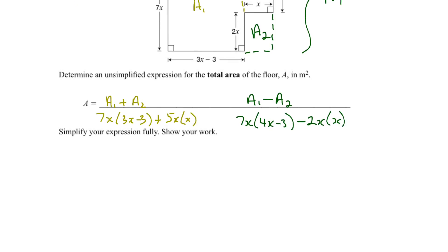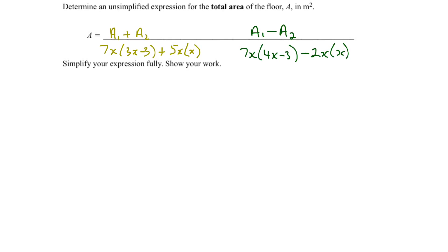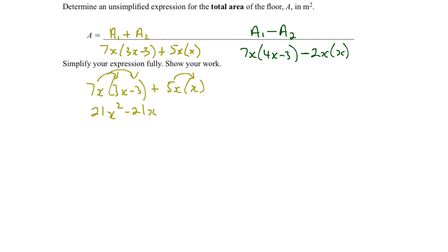Let's move up a little to give us more room to simplify. So let me write 7x times (3x minus 3) plus 5x times x. We're going to distribute across the brackets. So 7x times 3x is 21x squared; 7x times minus 3 is negative 21x; and 5x times x is positive 5x squared. Now collecting like terms: 21x squared and 5x squared give us 26x squared minus 21x. That's our simplified expression for the total area.